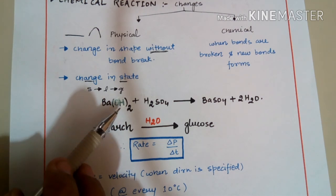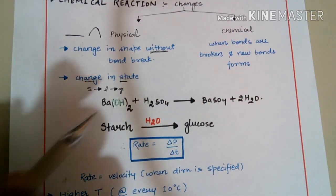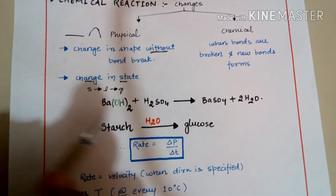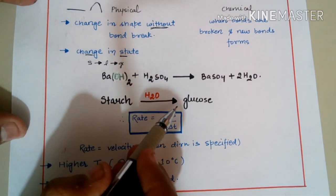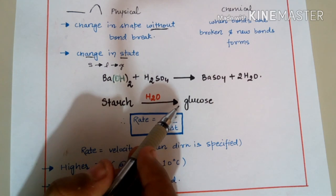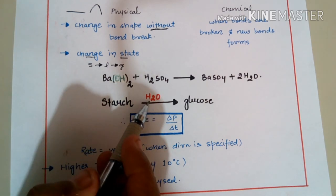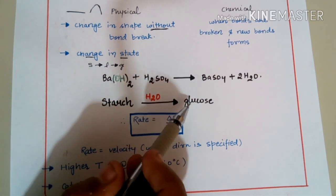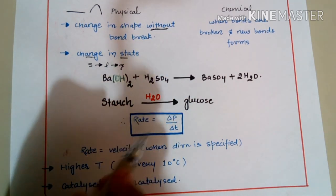For example, barium hydroxide reacting with sulfuric acid to form barium sulfate plus two water molecules is a chemical reaction. Another example is hydrolysis of starch: starch, a polymer of glucose, breaks down in the presence of water to form glucose. These are chemical reactions because bonds are broken.